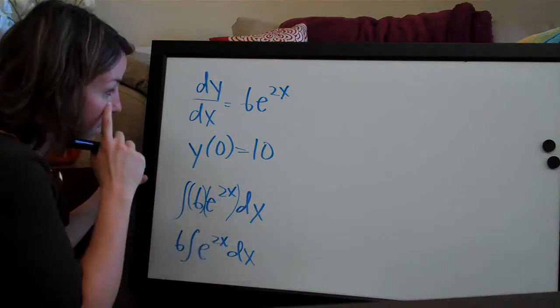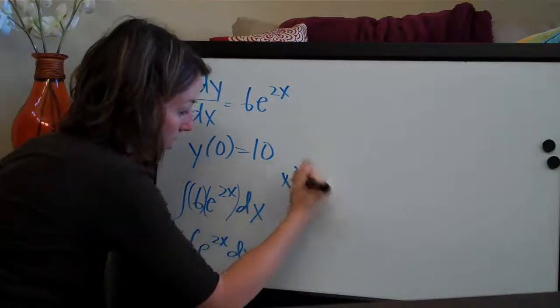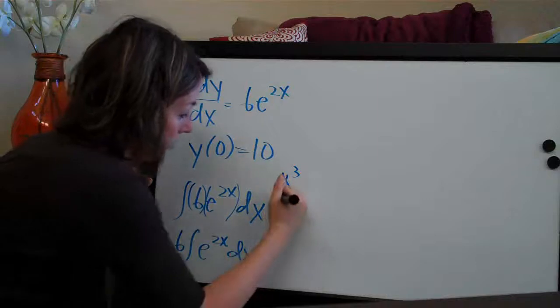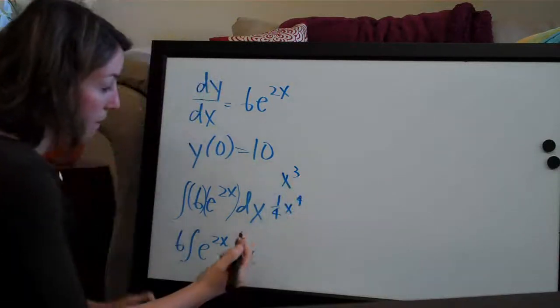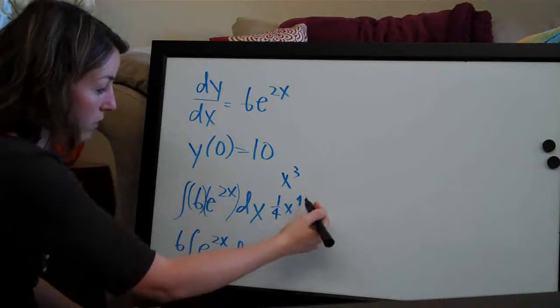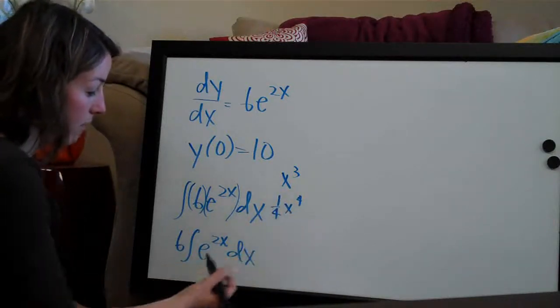normally if we had x^3, the integral of x^3 would be (1/4)x^4. We would add 1 to the exponent and then divide the coefficient by the new exponent, and that would be the answer.